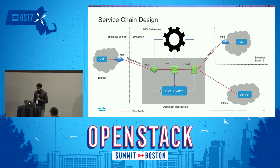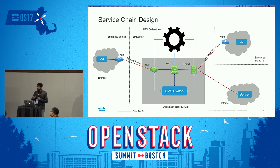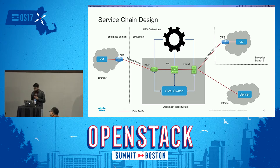The problem we see with this service chain design is that there is no dynamic approach. At the start of creation we set up router as a service, or couple it with firewall as a service, or couple both with IPS as a service. But on demand we cannot provision something new or orchestrate new rules. That is the problem we are trying to tackle.